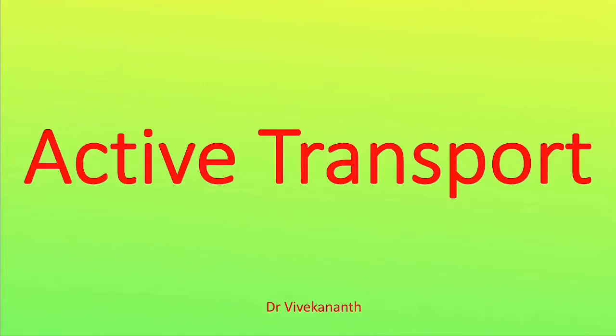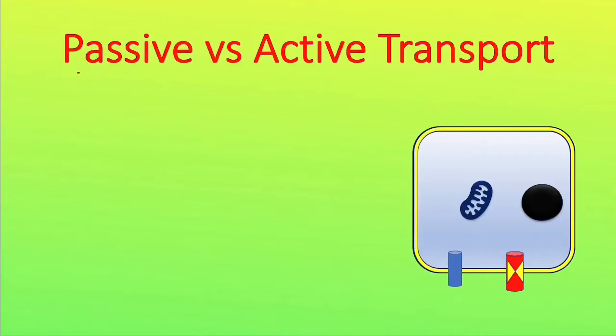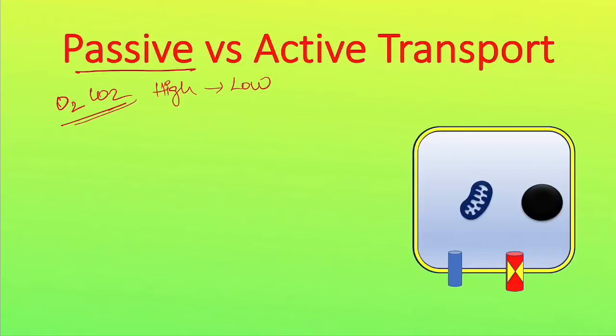Active transport mechanisms utilize energy to transport solutes from low concentration to high concentration. In the last class we discussed passive transport, where molecules are moved from high concentration to low concentration. Such favorable conditions may not exist for all the molecules — some molecules like oxygen and carbon dioxide may only depend on passive transport because they have a favorable concentration gradient.